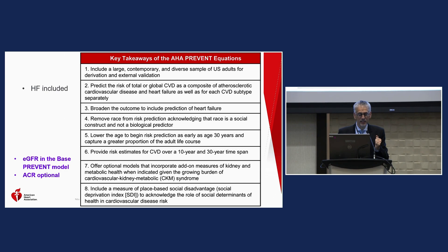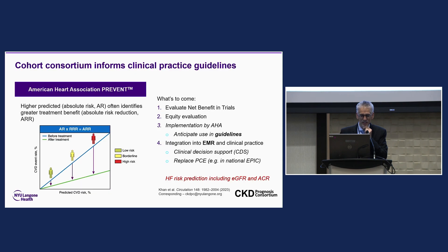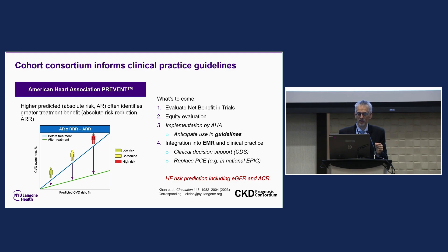The article shows the key takeaways. Heart failure is included. eGFR and albuminuria are included in optional models — you don't require albuminuria. There was a lot of conversation with the AHA on this. The idea is to inform clinical practice guidelines. Higher predicted absolute risk often identifies greater treatment benefit because the absolute risk times the relative risk reduction equals attributable risk. What's to come: net benefit evaluation in trials, equity evaluation, integration into actual guidelines, and implementation into EMRs and clinical decision support — how to put it into Epic thoughtfully. Heart failure risk prediction is available now.